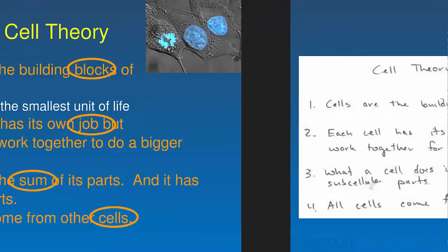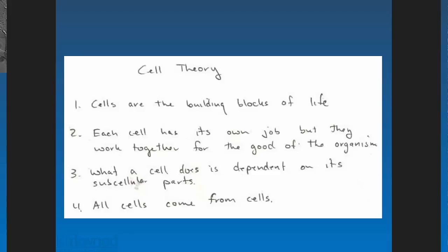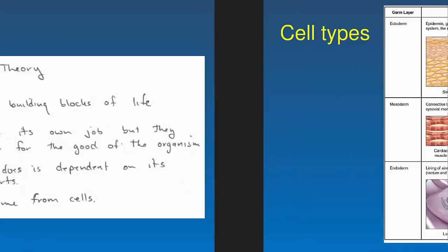To memorize cell theory, simplify it to key words: cells are building blocks, each cell has a job of its own, a cell is the sum of its parts, and all cells come from other cells. I'm going to emphasize making good note cards — maybe five-by-six or six-by-four cards — so you can get everything you need on one card. If you can get about 15 of these note cards committed to memory, you basically have the entire chapter on cells memorized.